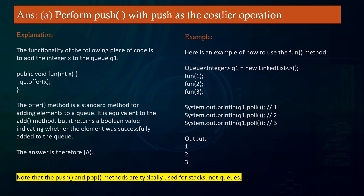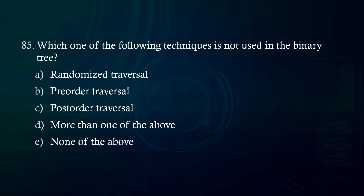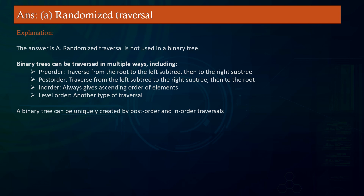Which one of the following techniques is not used in the binary tree? A. Randomized traversal B. Pre-order traversal C. Post-order traversal D. More than one of the above E. None of the above. Answer: Randomized traversal. Explanation: Randomized traversal is not used in a binary tree. Binary trees can be traversed in multiple ways including: Pre-order — traverse from root to left subtree then to right subtree; Post-order — traverse from left subtree to right subtree then to root; In-order — always gives ascending order of elements; and Level order. A binary tree can be uniquely created by post-order and in-order traversals.